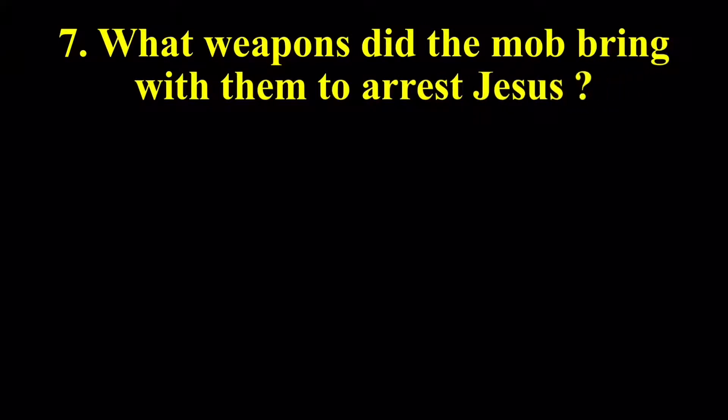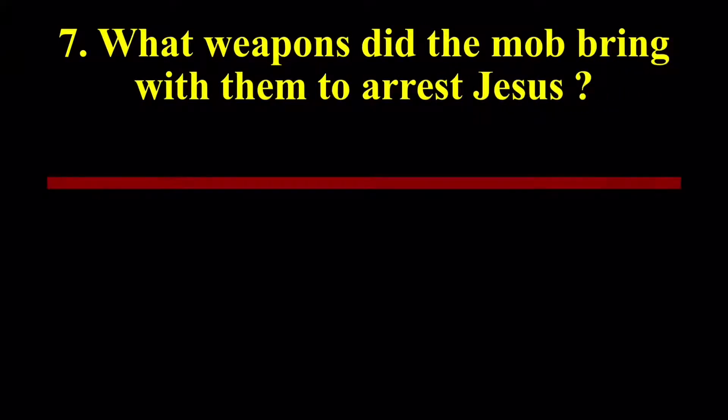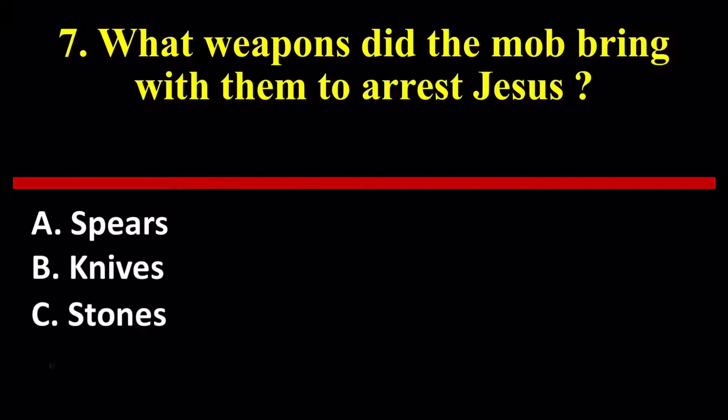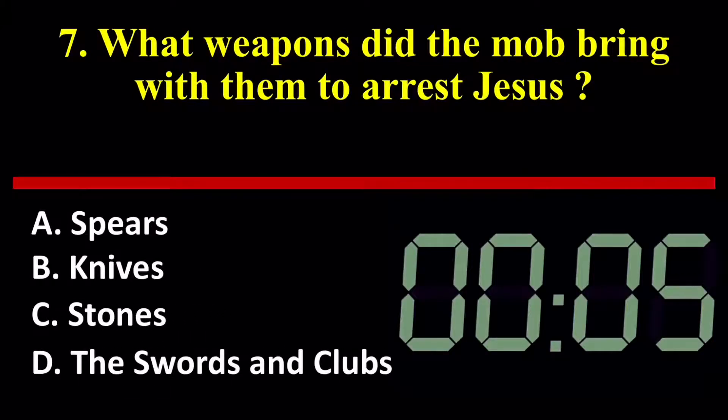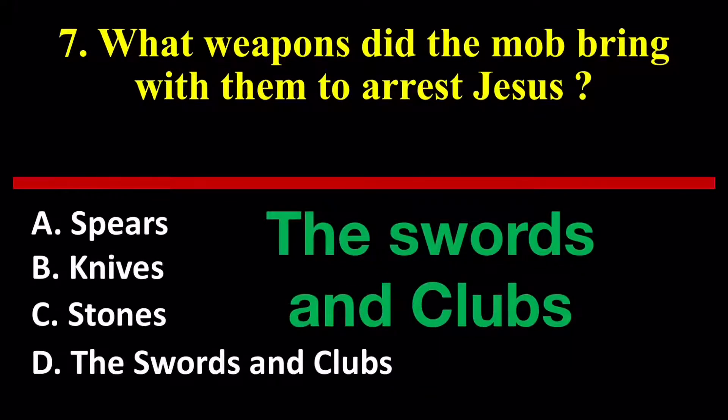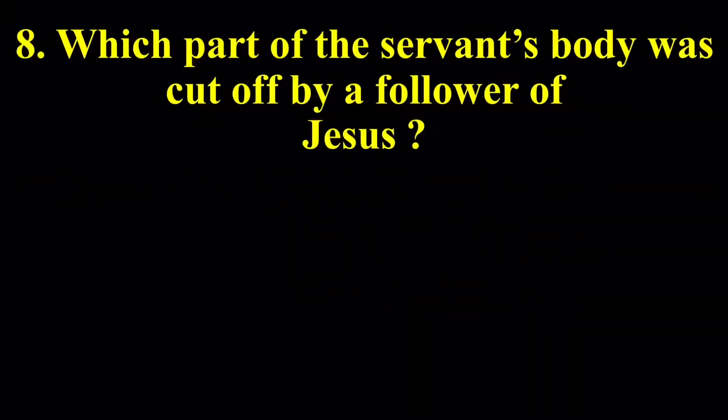Question number 7: What weapons did the mob bring with them to arrest Jesus? Spears, knives, stones, swords and clubs. Swords and clubs is the right answer. Question number 8: Which part of the servant's body was cut off by